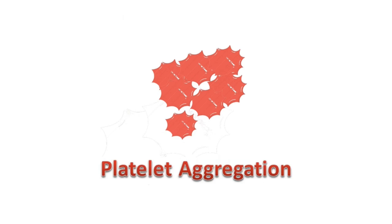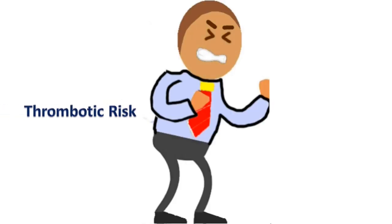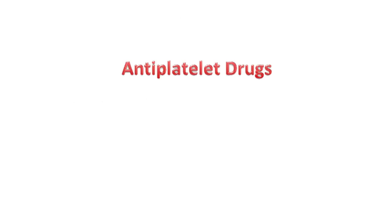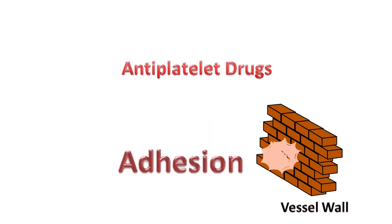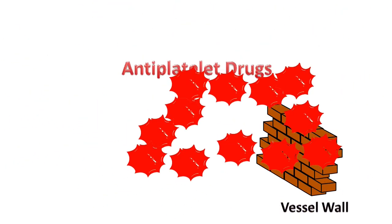Antiplatelet drugs, such as aspirin and clopidogrel, inhibit platelet aggregation. The biggest concern is the bleeding risk in patients taking these drugs, and the thrombotic risk if the drug is stopped. Different antiplatelet drugs work on different sites in the whole process of platelet adhesion, activation, and aggregation.